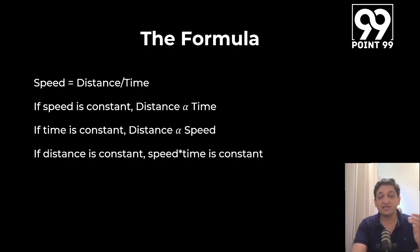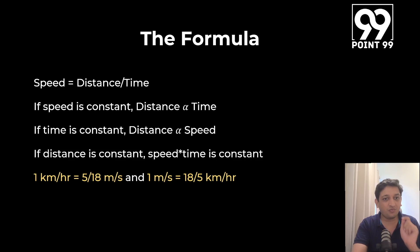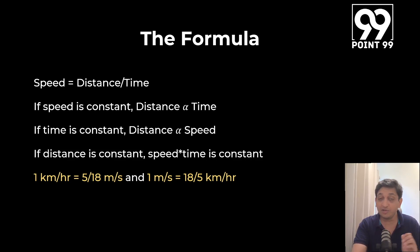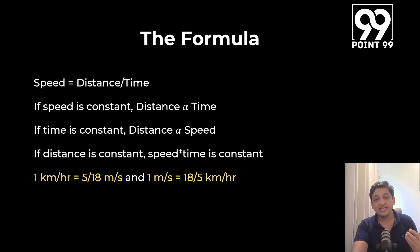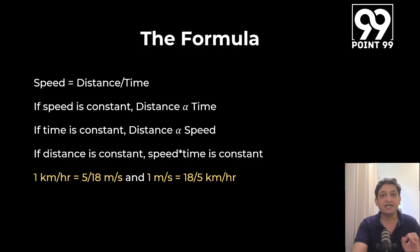Similarly, if the speed reduces, you will take more time to cover the same distance. Now there is one small thing to remember: the conversion from kilometers per hour to meters per second. One kilometer per hour translates into 5/18 meters per second, and 1 meter per second converts to 18/5 kilometers per hour. So if someone is traveling at 18 kilometers per hour, you multiply by 5/18 to get 5 meters per second.